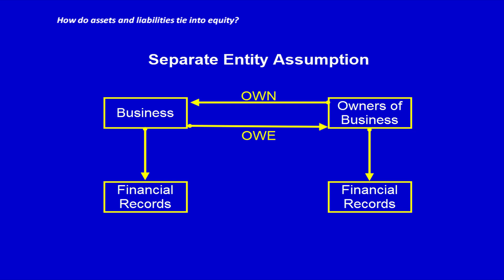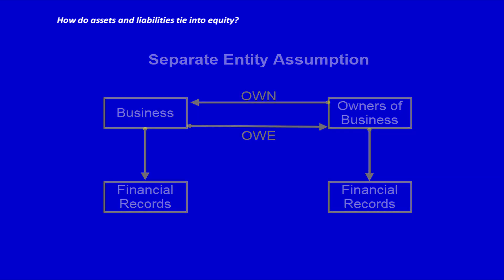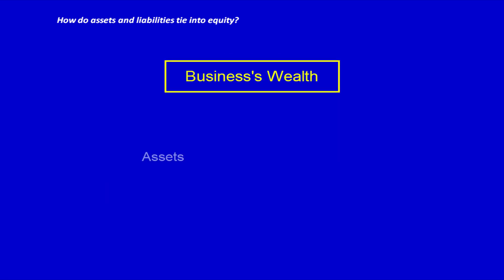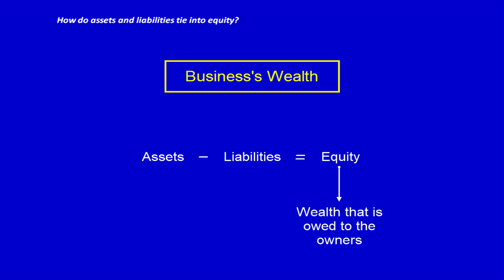So how is wealth calculated? By adding up all the assets and subtracting the liabilities. The left over, called the residual value or residual amount, is equal to the wealth that the business owes to the owners. So assets minus liabilities is equal to equity. Remember, equity is the wealth that the business owes to the owners.